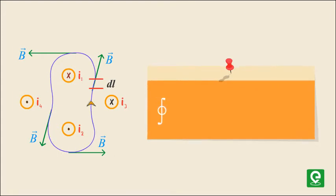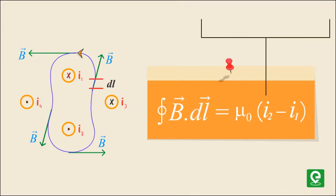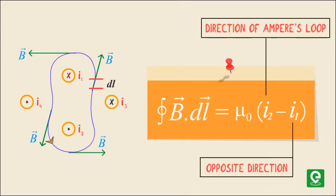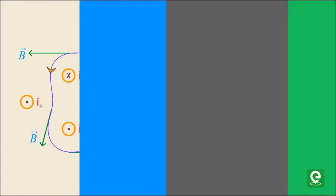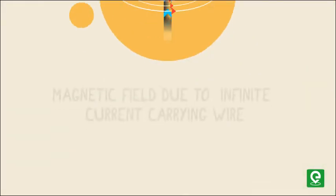Hence, ∮ B·dl = μ₀(I₂ - I₁), where I₂ is in the direction of Ampere's loop and I₁ is in the opposite direction. As a simple application of this, we can derive the magnetic field due to infinite current carrying wire using Ampere's Circuital Law.